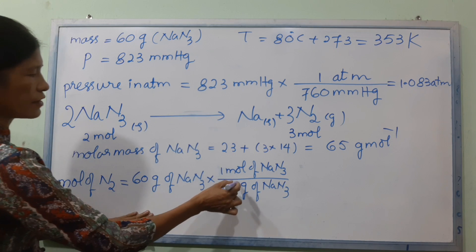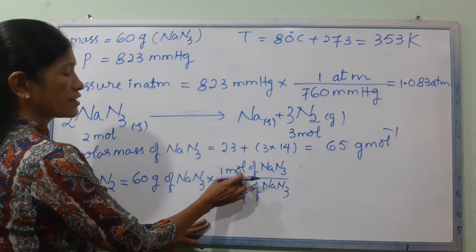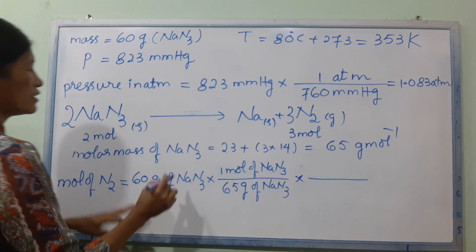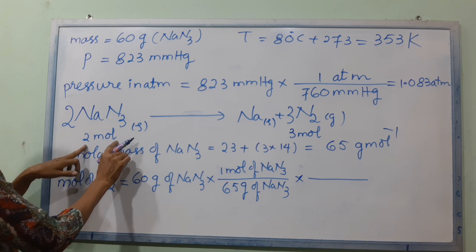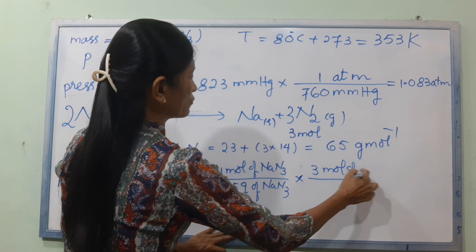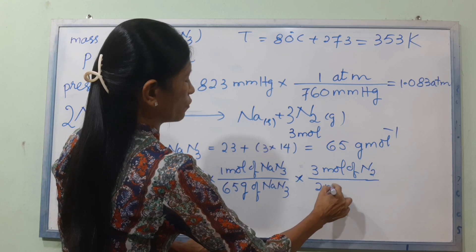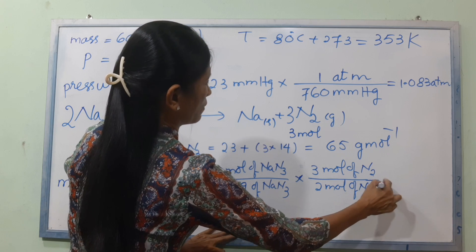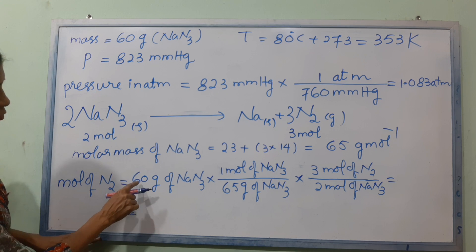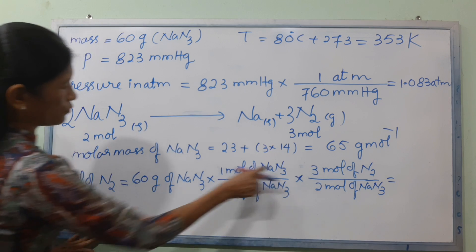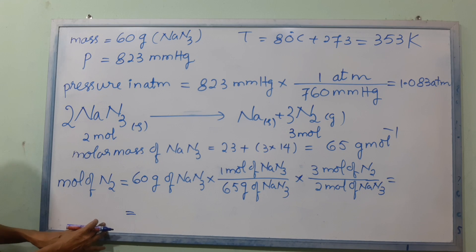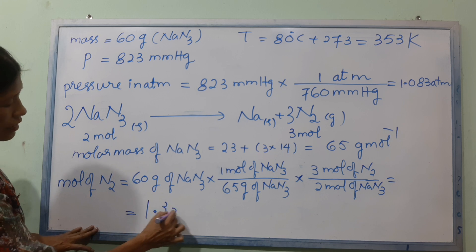2 mol of NaN3 gives 3 mol of nitrogen gas. This will take 3 mol of nitrogen. And now 2 mol of NaN3 gives 3 mol of N2. So we're going to get this product.